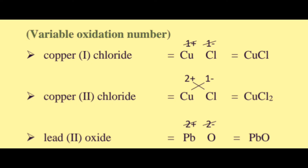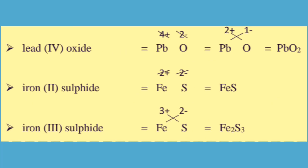Let's look at lead oxide. Lead has variable oxidation numbers 2 and 4. For lead(II) oxide, lead has oxidation number 2 plus and oxide is O with oxidation number 2 minus. 2 plus and 2 minus cancel, so the formula is PbO.